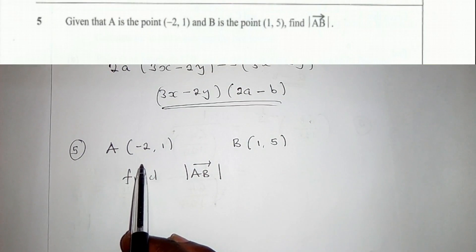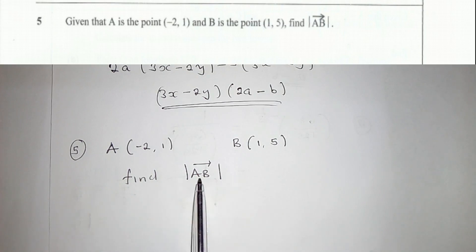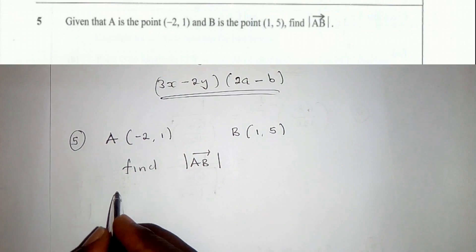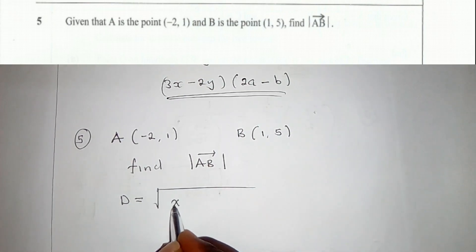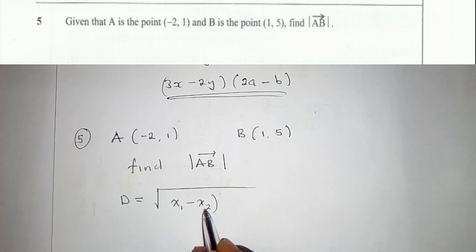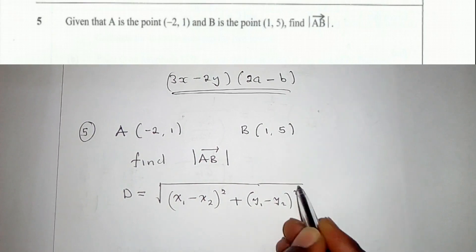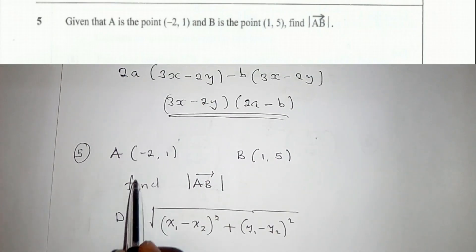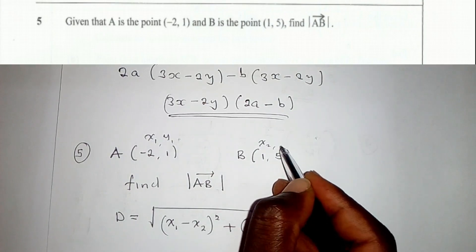For Question 5, given that A is the point (−2, 1) and B is the point (1, 5), find the distance from A to B. The distance formula is: distance equals the square root of (x₁ minus x₂) squared plus (y₁ minus y₂) squared. We label our coordinates: x₁ = −2, y₁ = 1, x₂ = 1, y₂ = 5, and plug them into the formula.